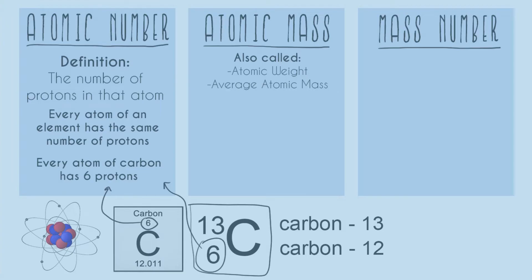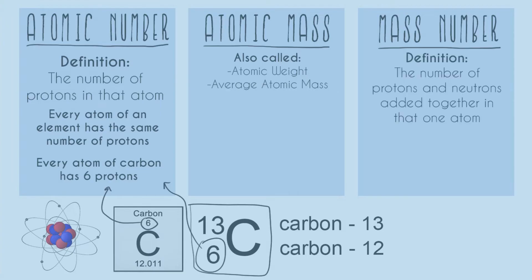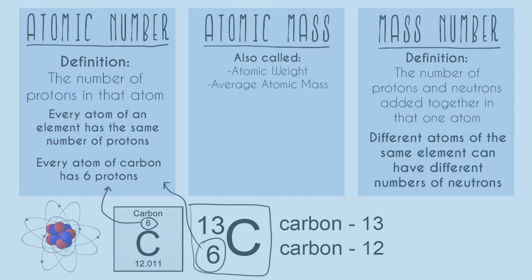Now moving along to mass number. The definition of mass number is the number of protons and neutrons added together in that one atom — so not just protons like atomic number, but both protons and neutrons. An important fact: mass number is not on the periodic table. No periodic table anywhere is going to show you the mass number — we'll get into why in a second. Mass number will appear in other problems your teacher shows you. In the stacked-number notation, the top number above the atomic number is the mass number.